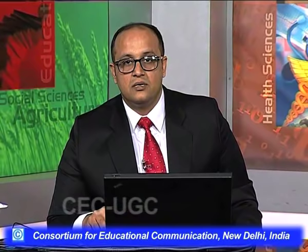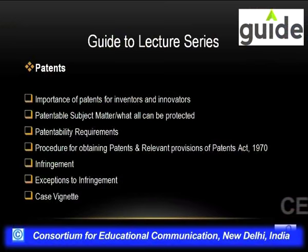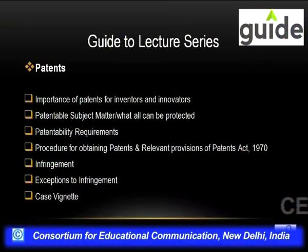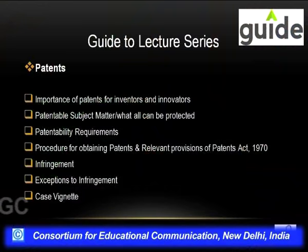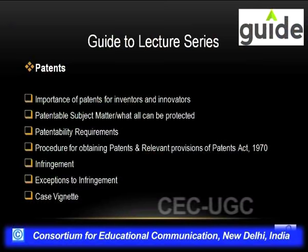The next step will be to see each intellectual property one by one. When it comes to patents, we will see the subject matter, the procedure for obtaining patent protection, the enforcement part, and how infringement of the patent takes place. When one gets a patent, they use it and exploit it for their benefit and for the masses. If it gets infringed, the state machinery provides protection to facilitate enforcement. We will also have a case study on patents and look at exceptions to infringement. Then in the next part, the next IP we'll start is copyright and related rights.